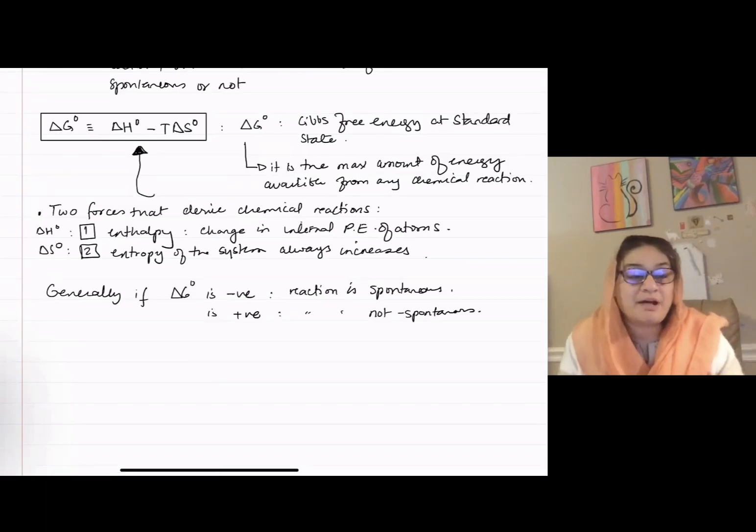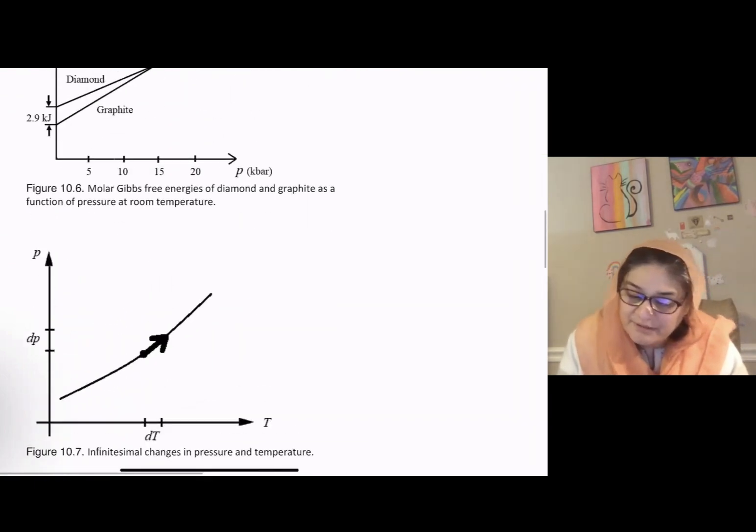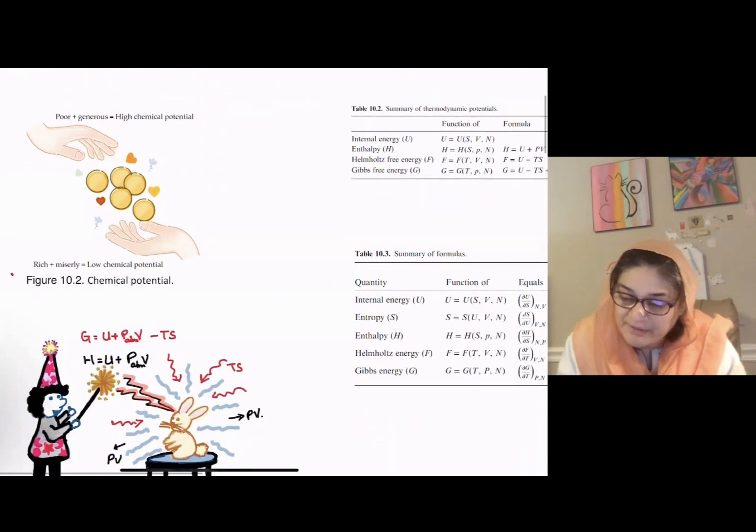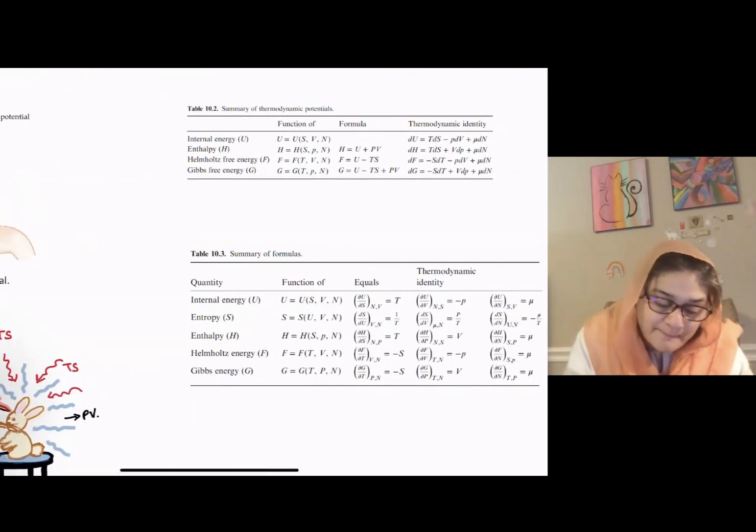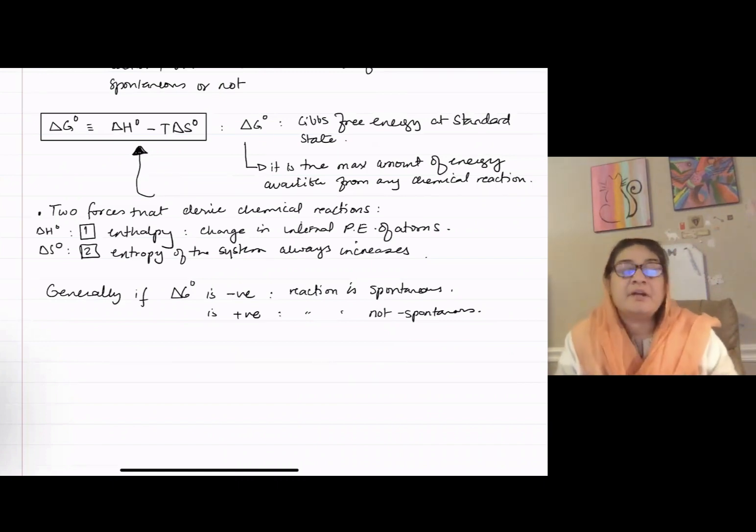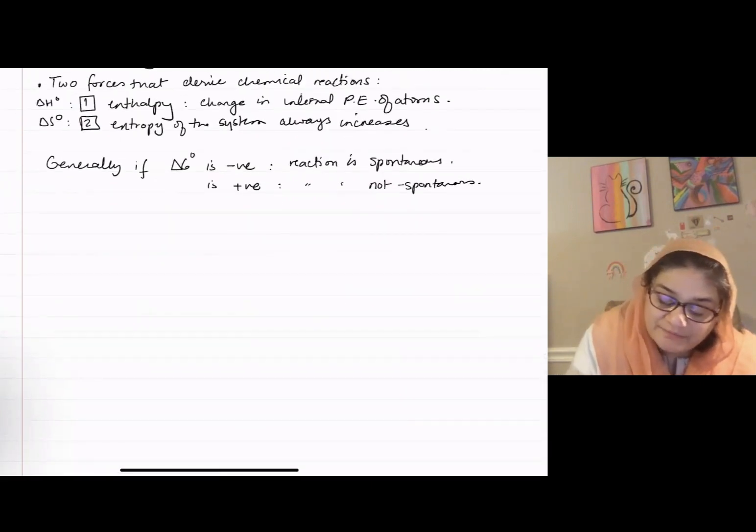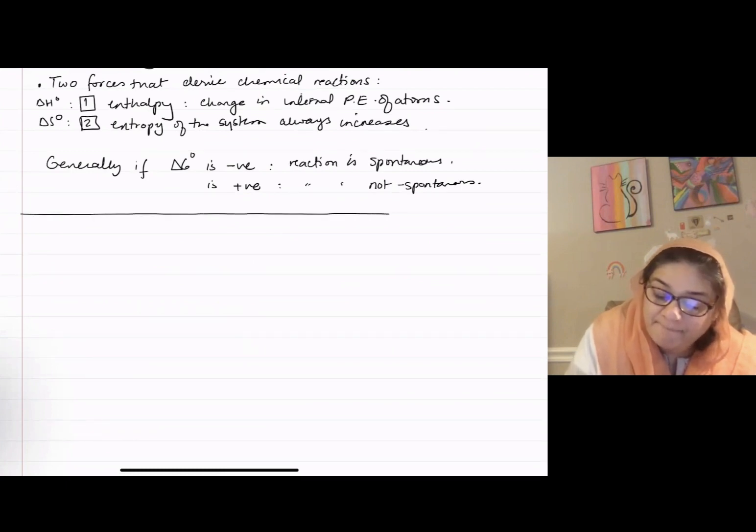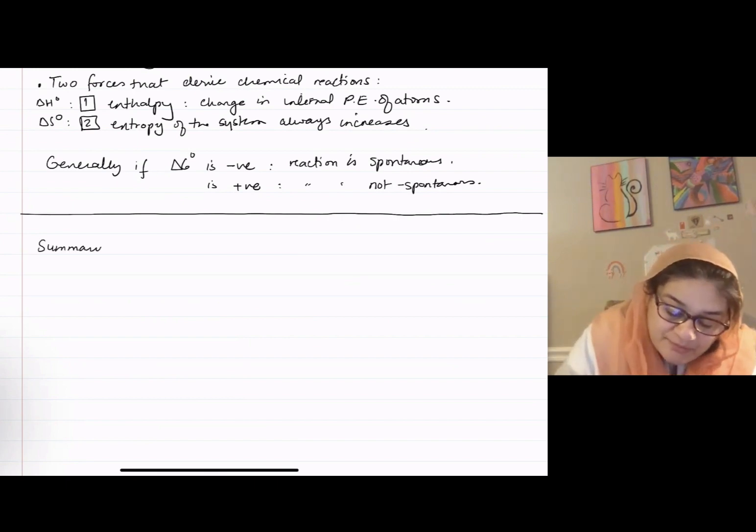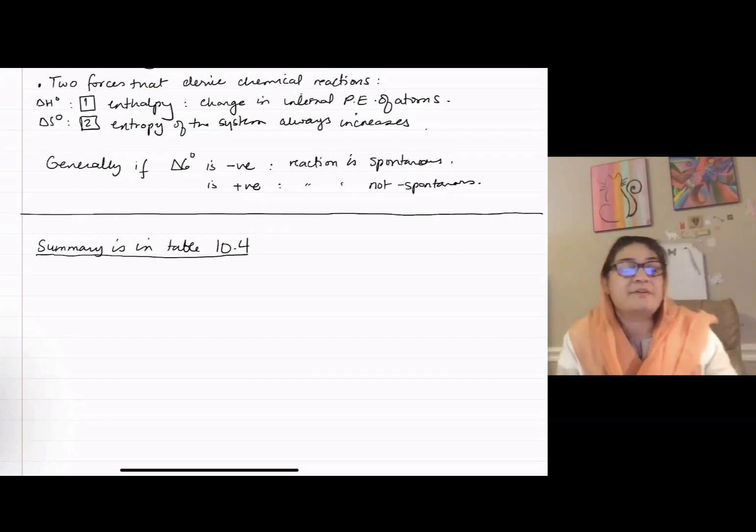In the textbook, I have given you a table. I didn't copy that table, but it gives you whether some reaction is going to be spontaneous or not. So let's try to figure that out. It's a summary in table 10.4. I will discuss this very quickly.